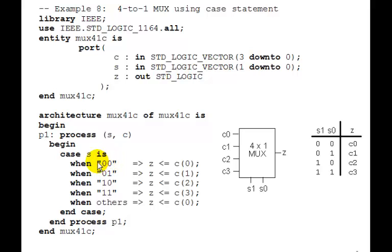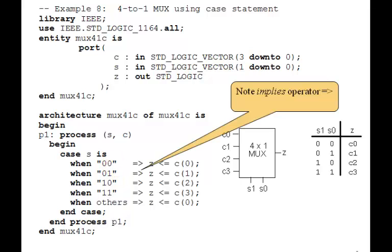For two or more bits, we use a string, so it's double quotes here. And then we use this symbol, which is the implies operator. That is, equals followed by a greater than sign. So when 0,0 implies that Z gets assigned C0.